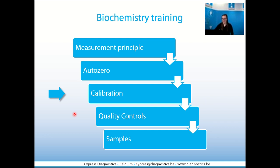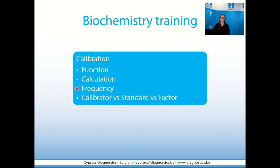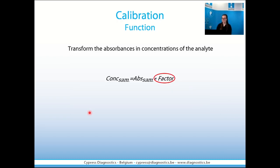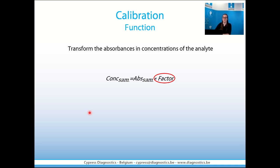What about the calibration? Why do we need to do a calibration? Because instruments only do one thing — measure the intensity of light. We cannot go to a doctor and say that for a certain patient, the detected light is higher than normal. The doctor needs concentration results. The calibration will transform the absorbance — the intensity of light — into concentrations of the analytes. We measure an absorbance, but we need the concentration. The relation between the two is the calibration factor.